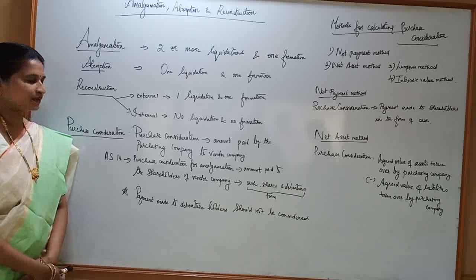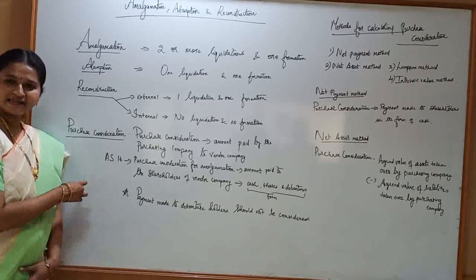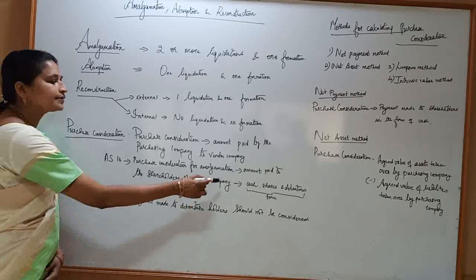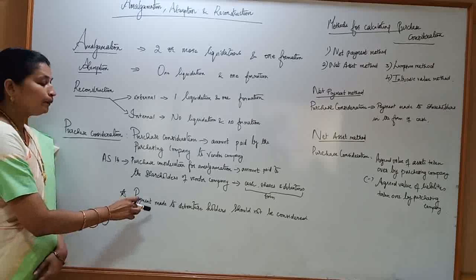Next is purchase consideration. Purchase consideration is the amount paid by the purchasing company to the vendor company. As per Accounting Standard 14, purchase consideration for amalgamation is the amount paid to the shareholders of the vendor company in the form of cash, shares, or debentures. Payment made to creditors should not be considered for calculating purchase consideration.